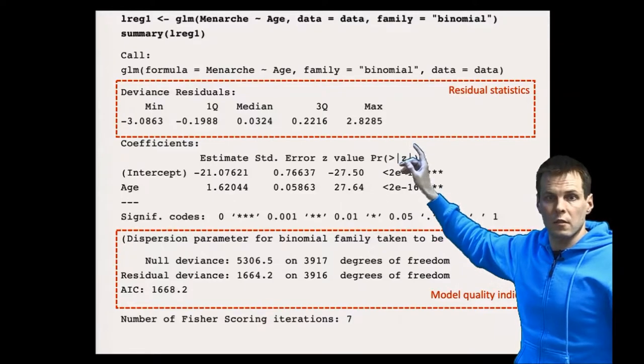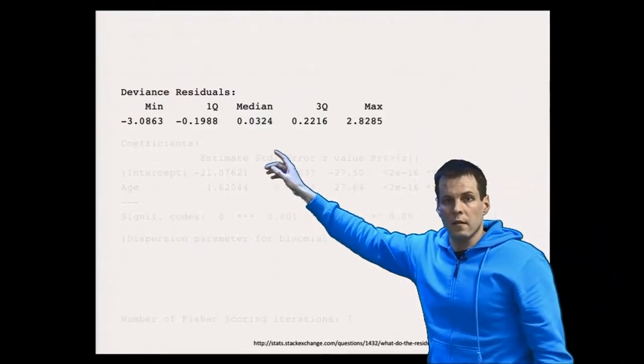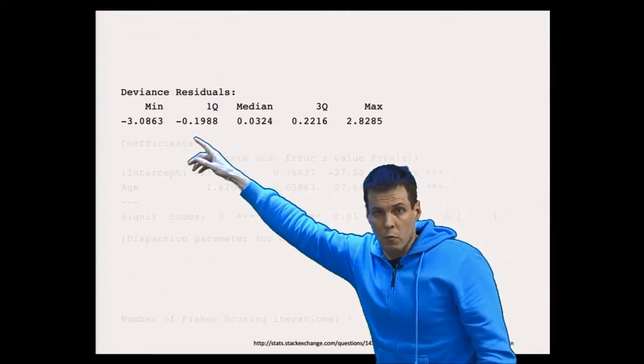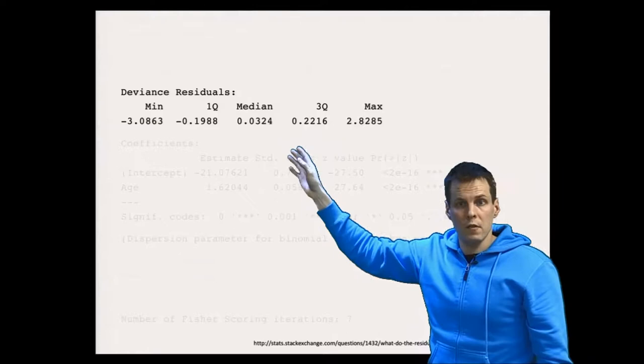Let's take a look at the residual statistics first. The residual statistics here give us the quartiles: minimum, maximum, and median of the residuals, the deviance residuals.